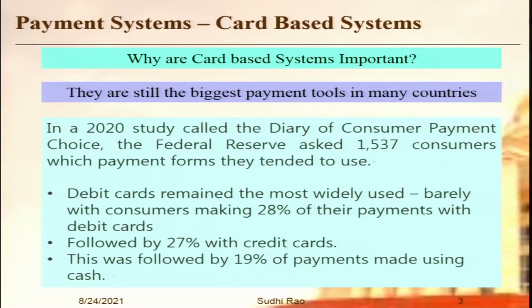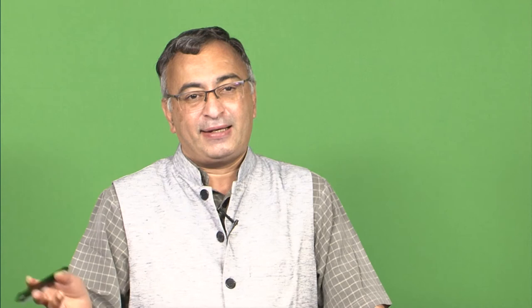As late as 2020, the US Federal Reserve did a survey asking 1,537 customers which payment system they normally choose first. 28 percent said debit card, 27 percent said credit cards, and 19 percent said cash. Adding these up, almost 75 percent of customers used one of the three traditional measures — credit card, debit card, or cash. Even as late as 2020, despite all advances in payment systems, almost 75 percent of all retail transactions were still done using these traditional ways.